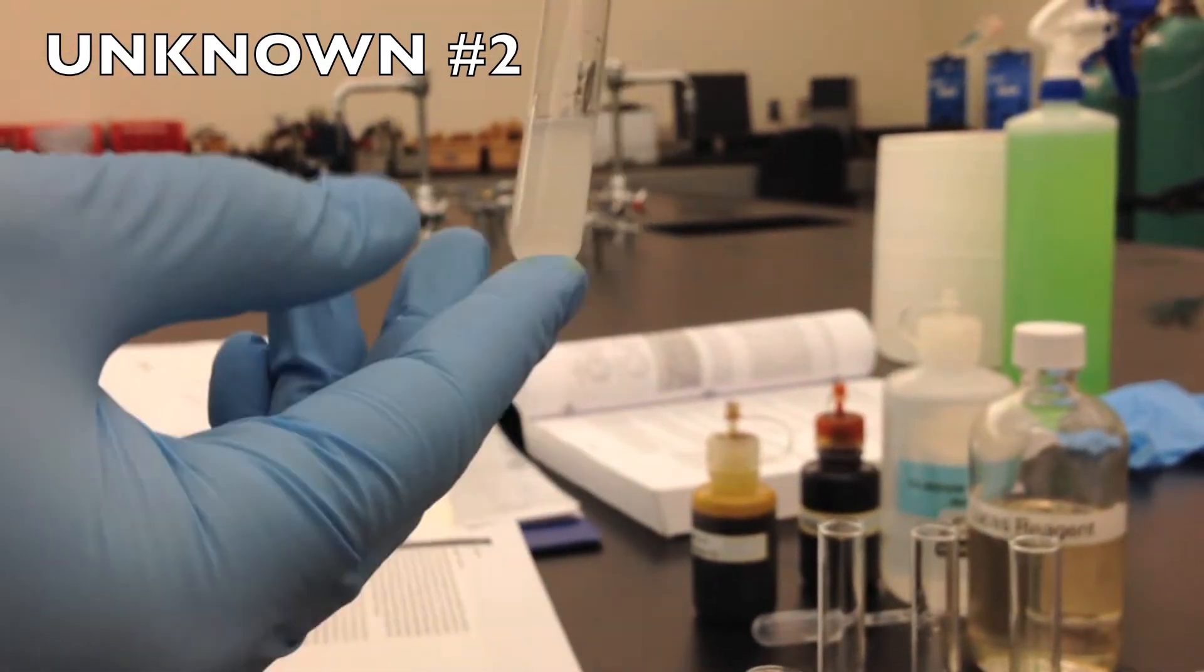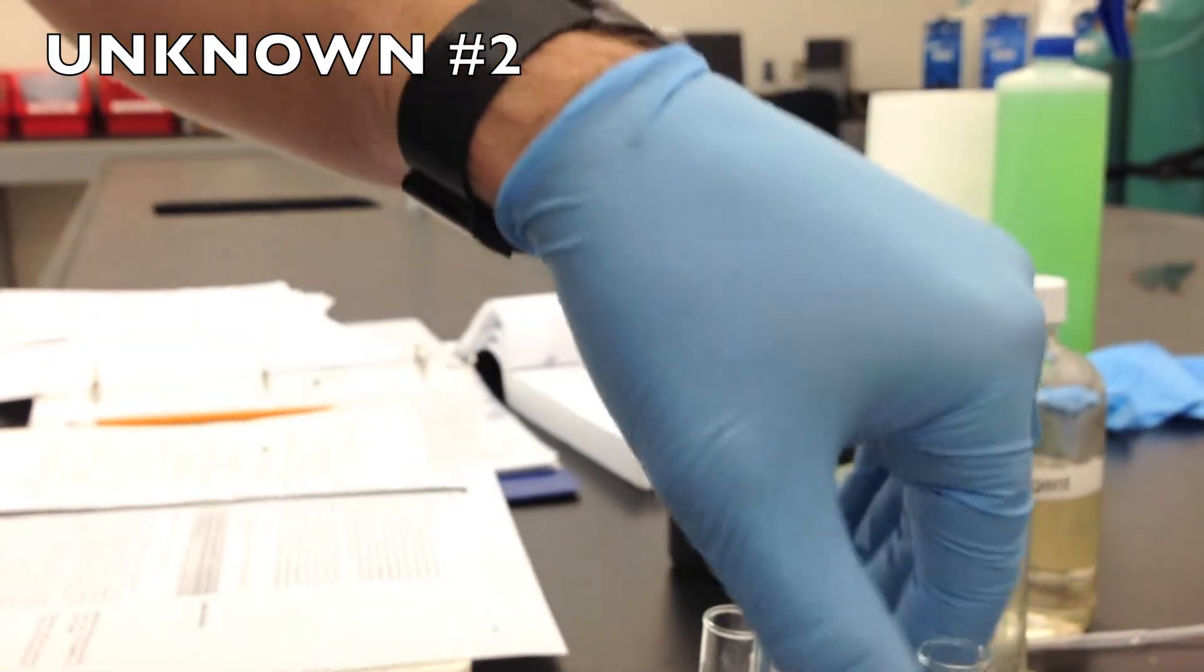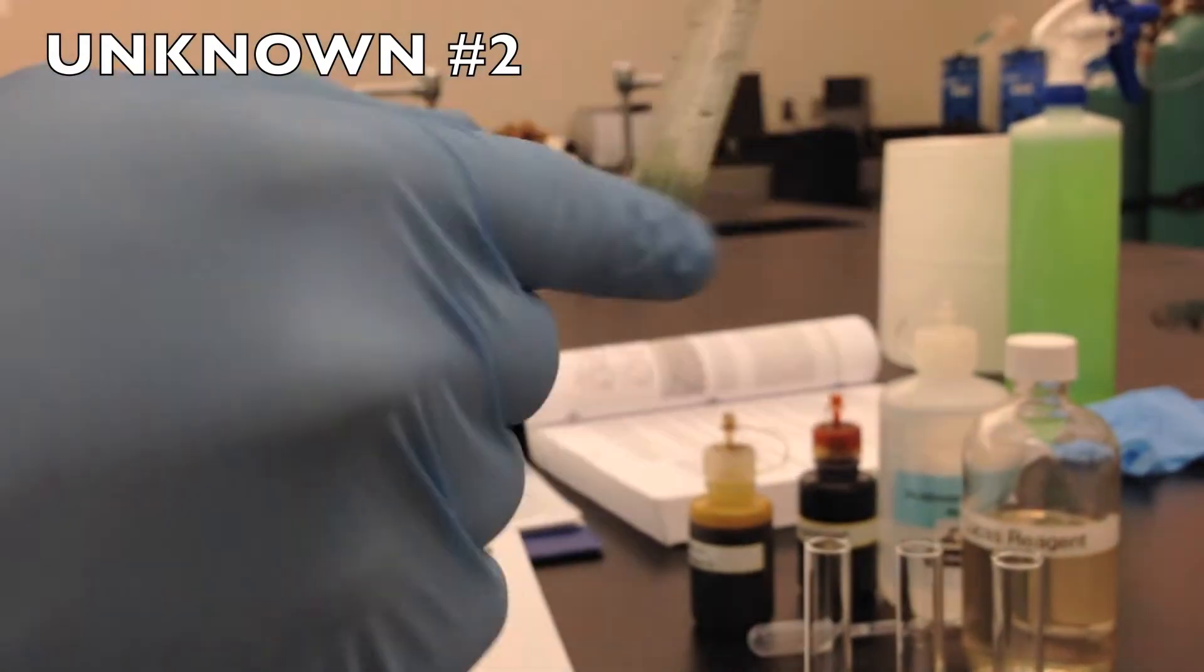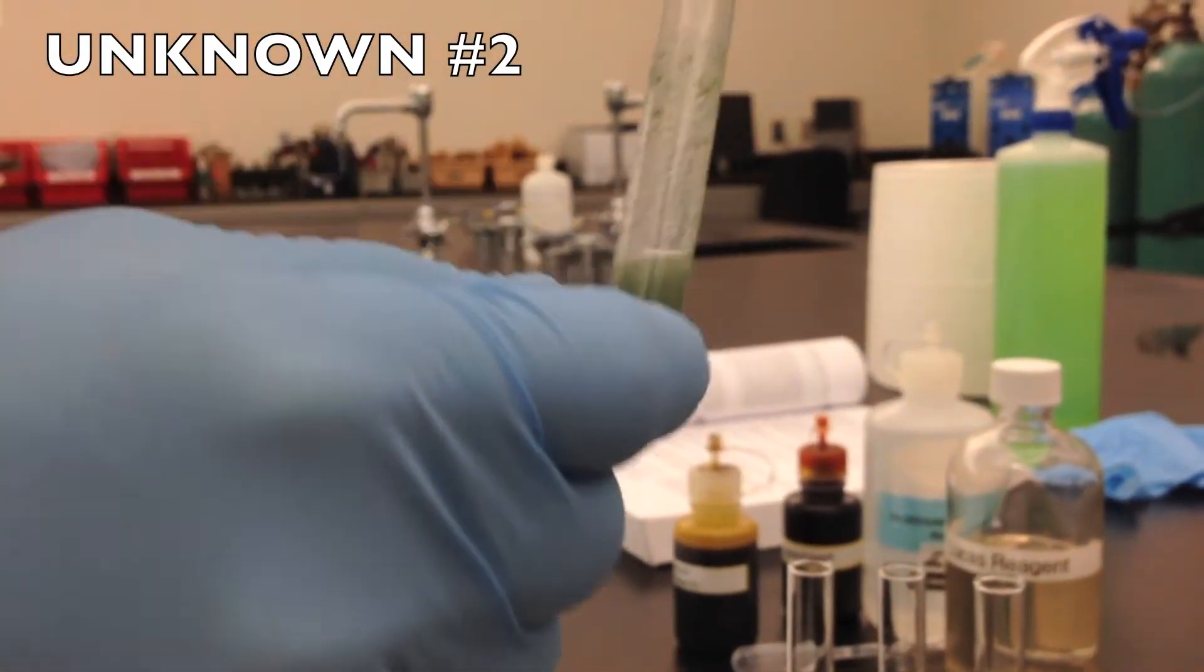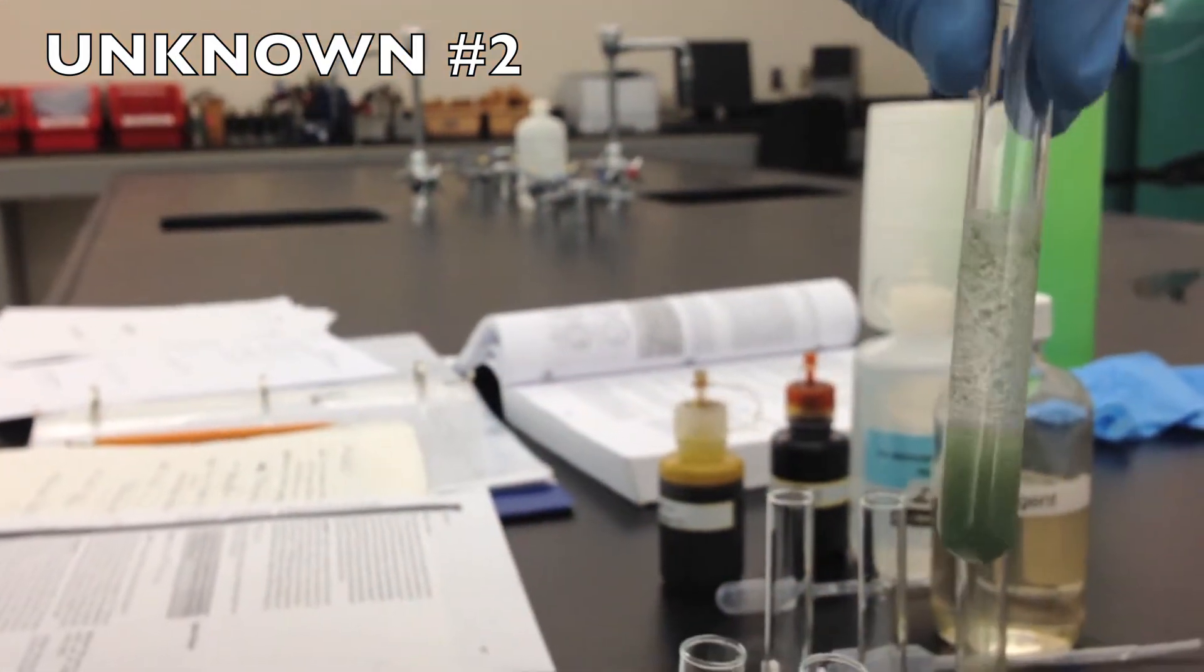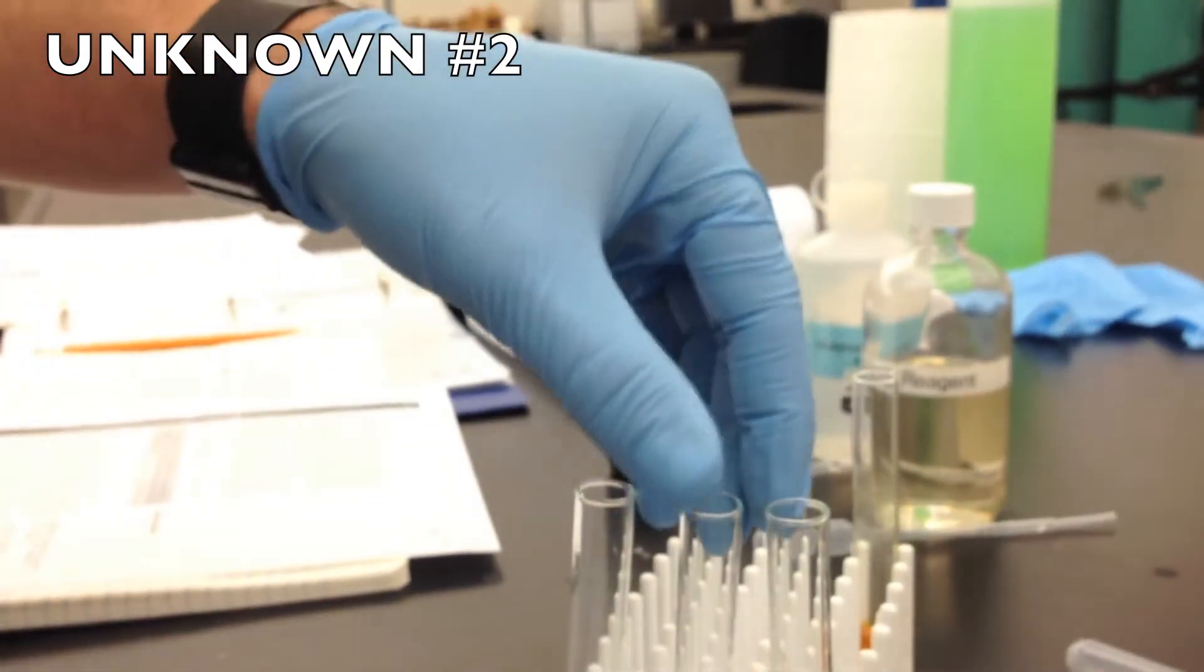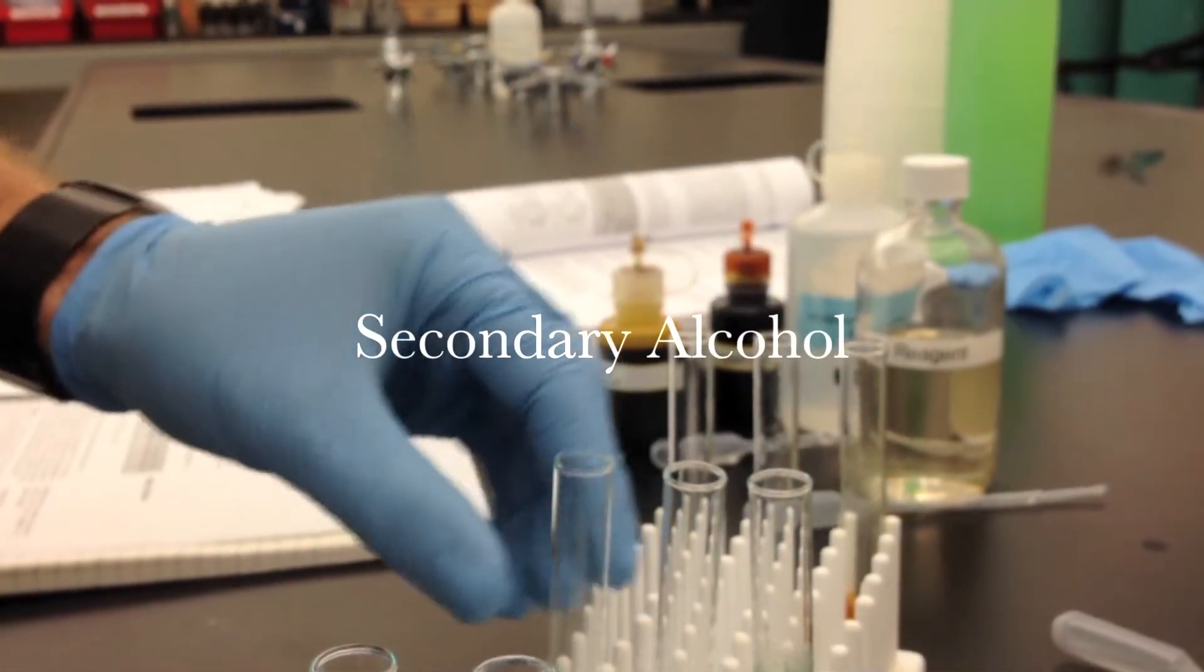And then we also got a positive result on the chromic acid test, which only indicates primary or secondary alcohol. So we can assume safely that the second unknown is indeed a secondary alcohol.